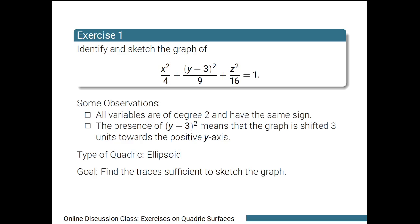For instance, for the term x squared over 4 to be 0, we need to set x equals 0, giving us the plane x equals 0, or the yz-plane. Next, for the quantity y minus 3 squared over 9 to be 0, we need to set y equals 3, corresponding to the plane y equals 3. Lastly, for the term z squared over 16 to be 0, we need to set z equals 0, giving us the plane z equals 0, or the xy-plane. Hence, we need to find the traces on the yz-plane, the plane y equals 3, and the xy-plane.